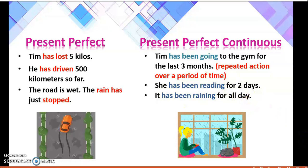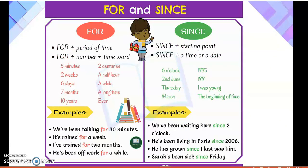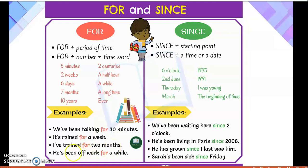Now let's see where we can use 'for' in perfect tense. We use 'for' to tell the period of time — 'for' plus a period of time, using a number plus time words. For example: five minutes, two weeks, six days, a long time, a while, half an hour. In a sentence: 'we have been talking for 30 minutes' — I am talking about a certain time period. 'It rained for a week' — 'for a week' tells me how long the rain has been falling. 'I have trained for two months' — two months is a time period. 'He has been off work for a while.'